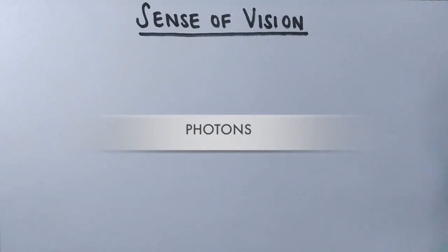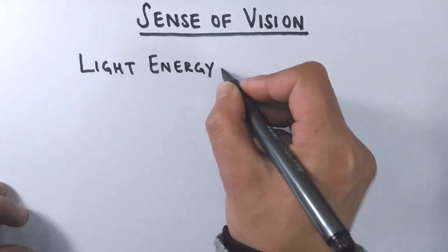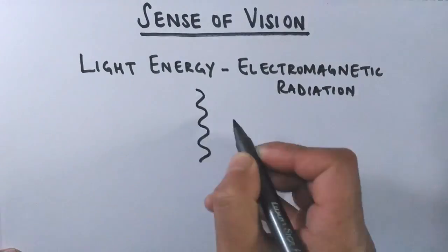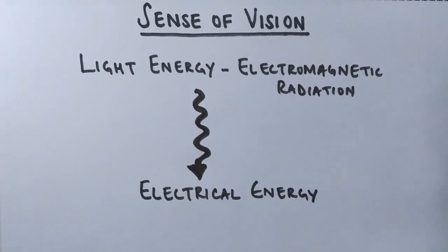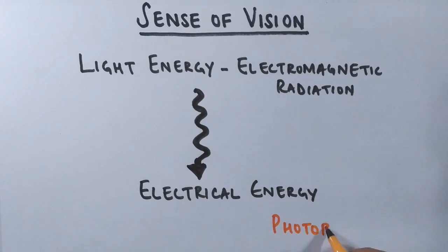Our sight or vision wholly depends upon the photons that we get from light. The working of this sense is based on conversion of light energy — which is of course an electromagnetic radiation — into electrical energy. Why electrical energy? Because to make it usable in our system, and this conversion is done by specialized cells in our eye called photoreceptor cells.